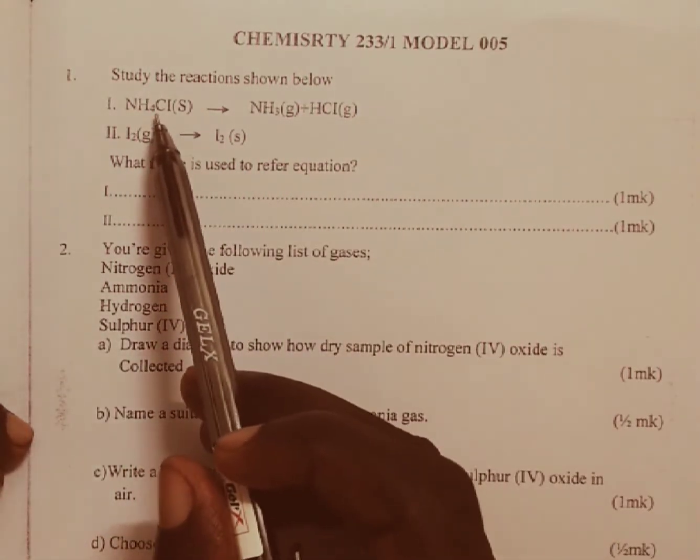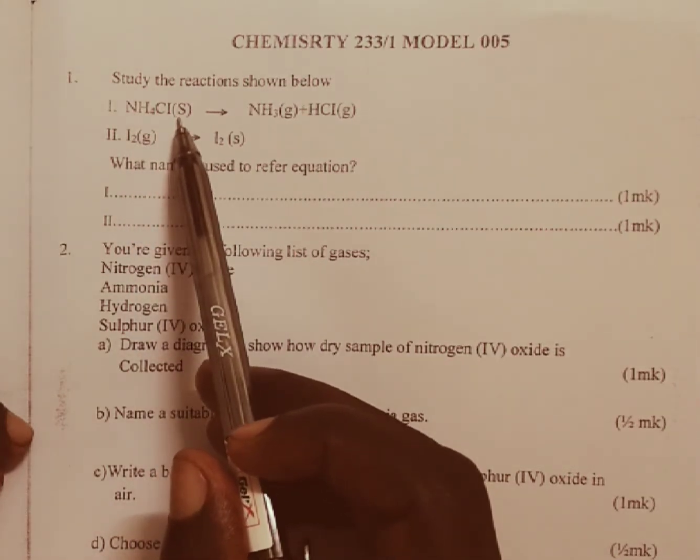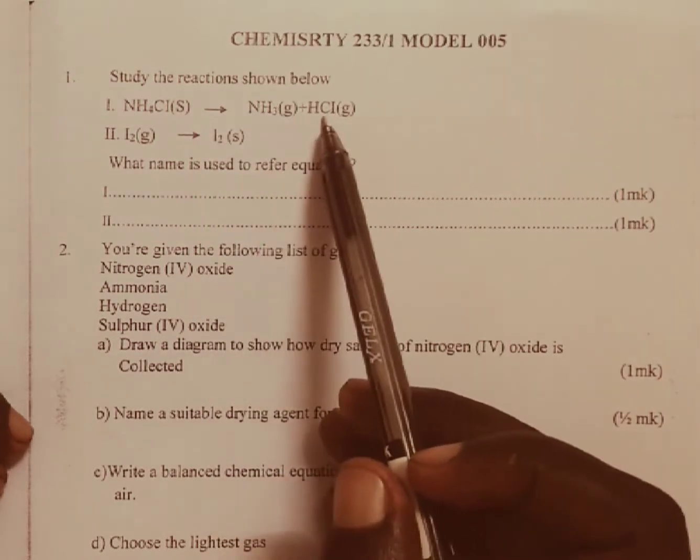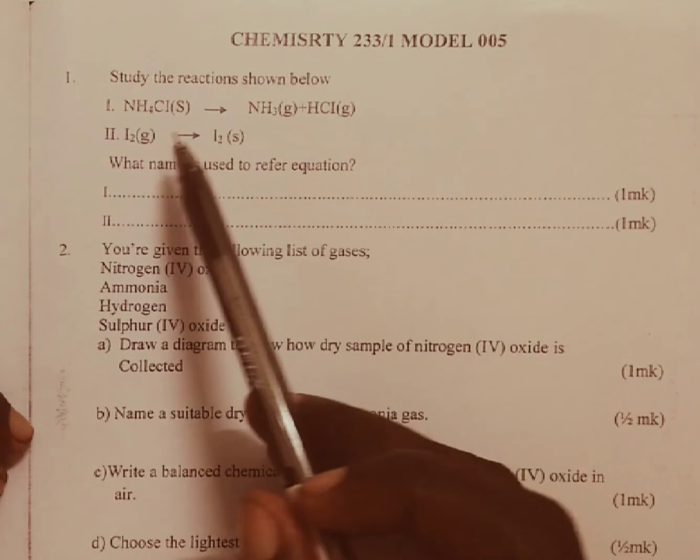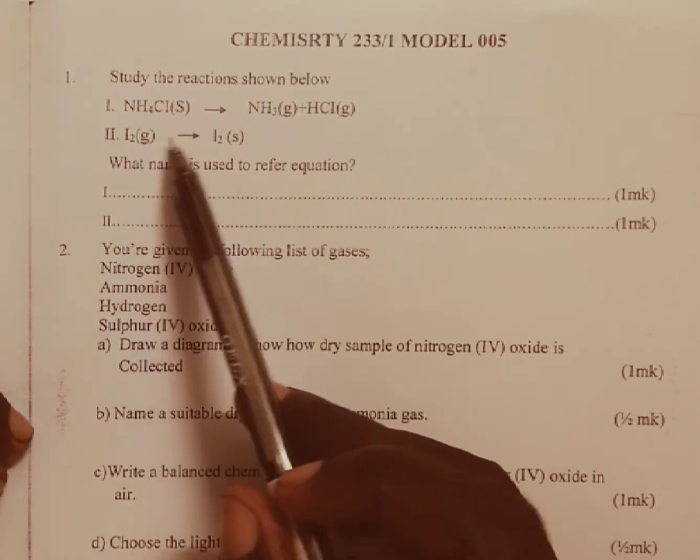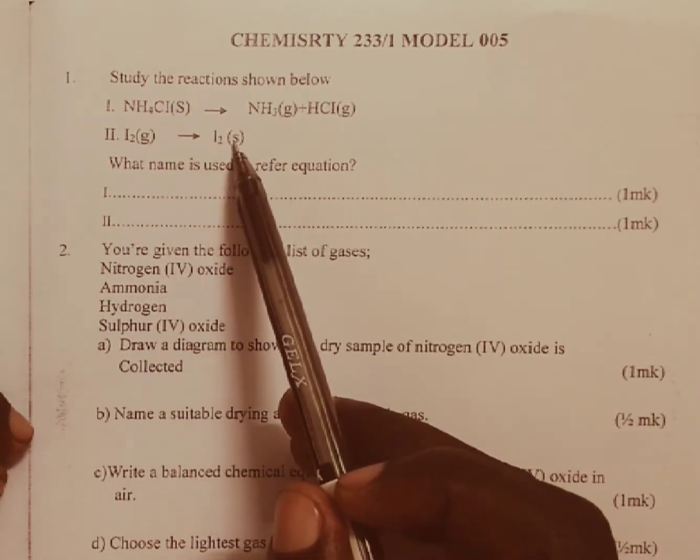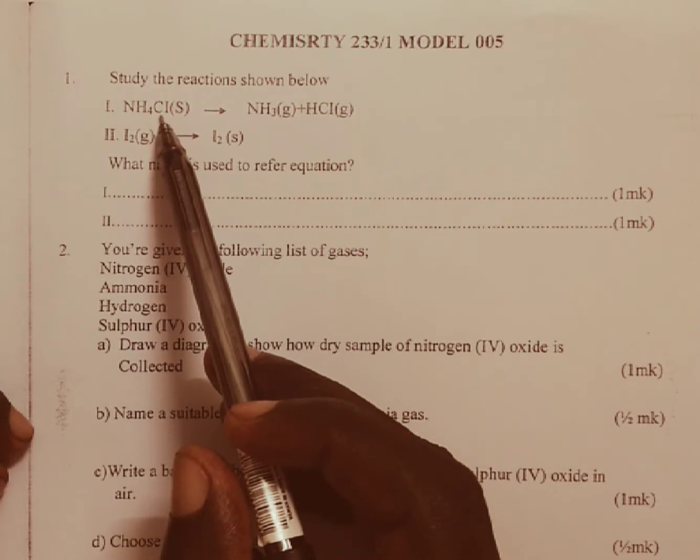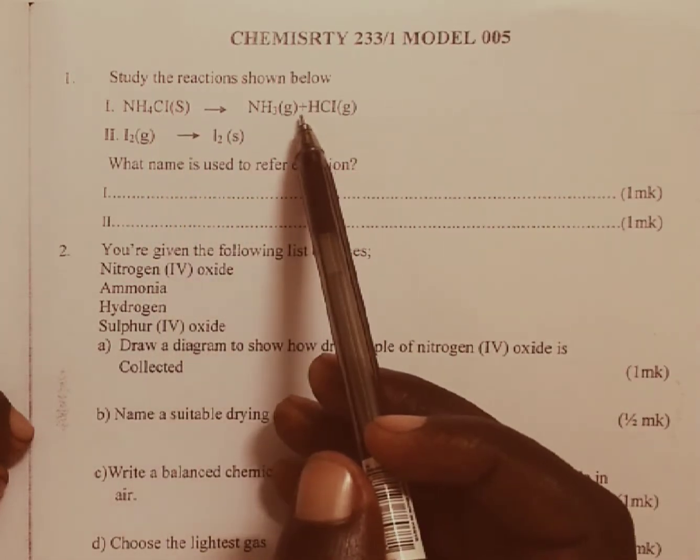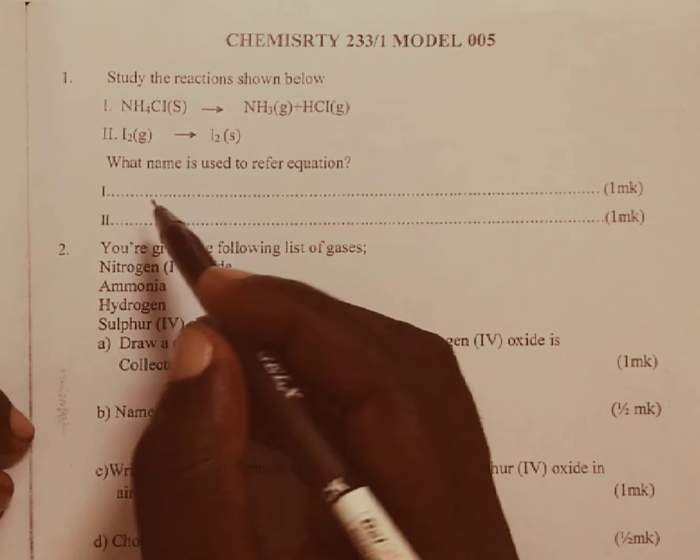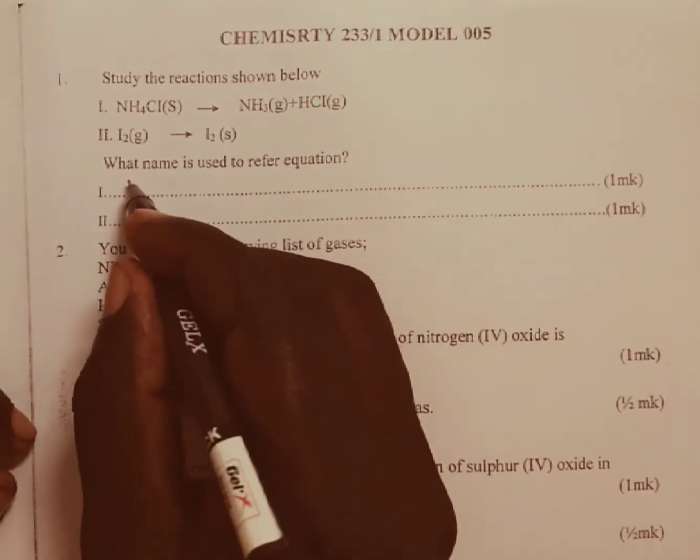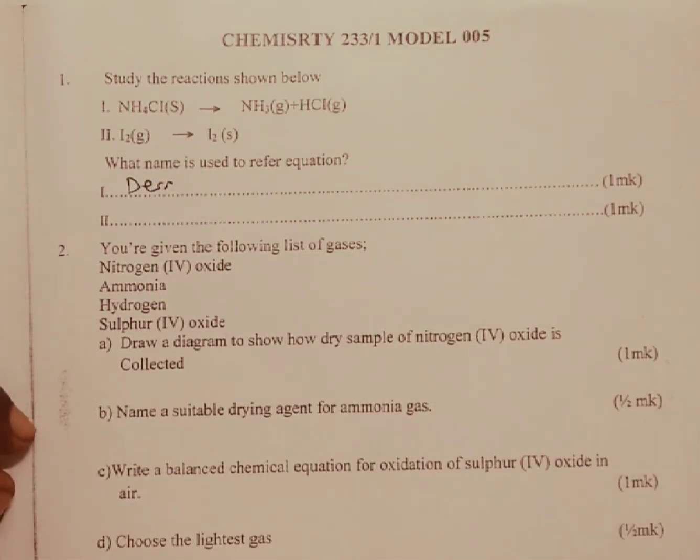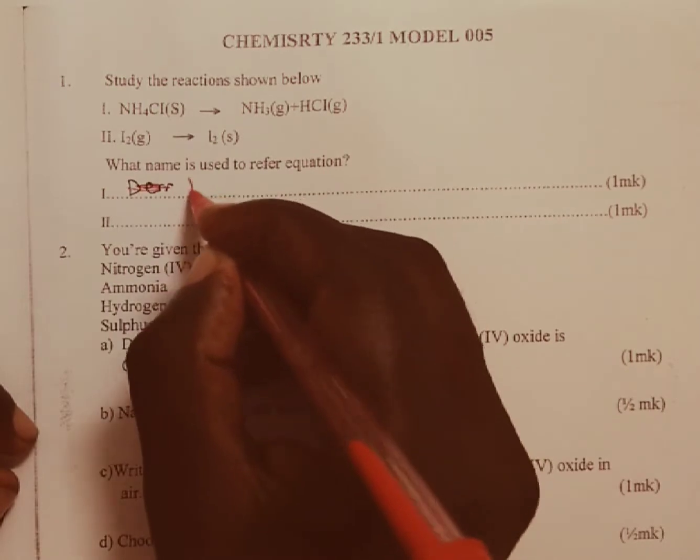The first reaction is where we have ammonium chloride solid, NH4Cl(S), being broken down into ammonia gas, NH3(g), and hydrogen chloride, HCl(g). Then we have iodine, I2(g), which is a gas changing directly to solid, I2(s). The first equation where we are decomposing ammonium chloride is called dissociation or decomposition.